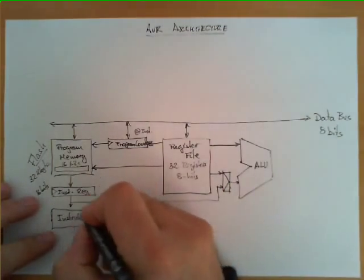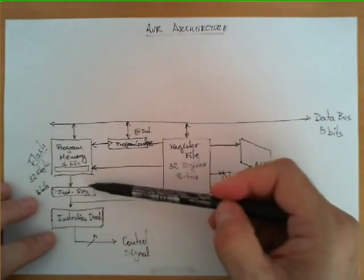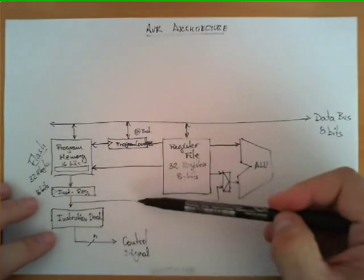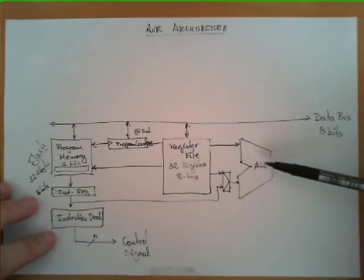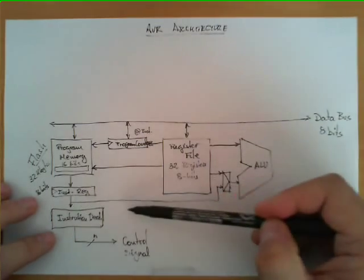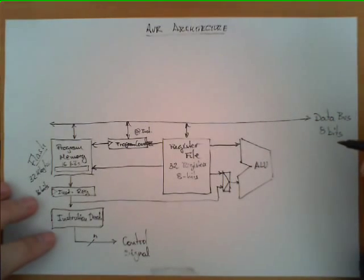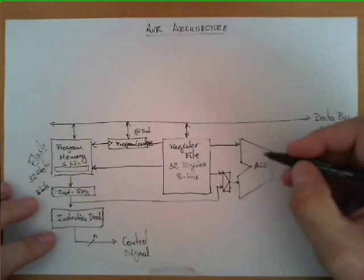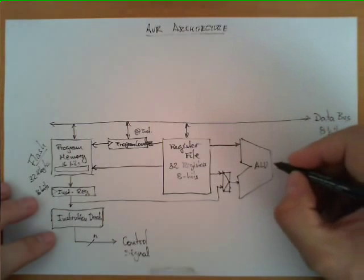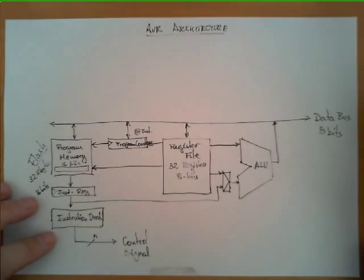This is the case in which the instruction obtained from the program memory contains, as part of its bits, a certain number that needs to be used by the ALU but is not stored in the register file. This is a very important connection that gives the architecture a lot of flexibility. The ALU is the block in charge of performing arithmetic, logic, and bit operations, and it also has the possibility of writing its value on the data bus.